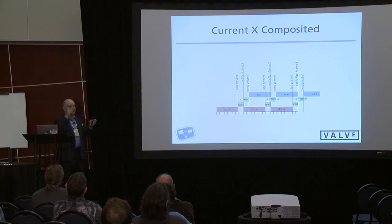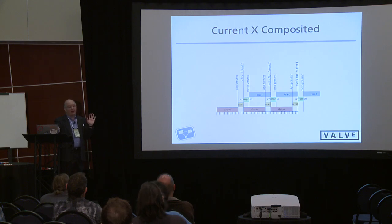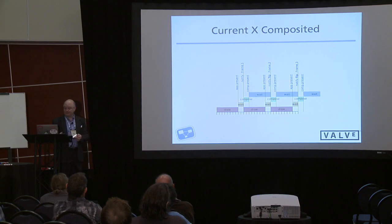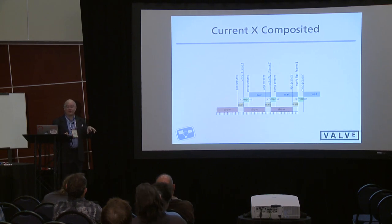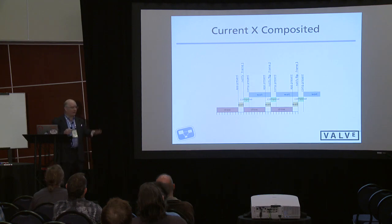Being always a frame behind would be tolerable if you told the application that — if the application knew when its frame was being displayed, it could probably survive. Windows does that and applications survive. Unfortunately, X actually tells the application that its frame was displayed when it told the compositing manager to display the frame, which is one frame early. So every frame is delayed by exactly one frame or more, and every frame the reported presentation time is a lie, which is suboptimal. You can see this in a composited environment if you've done gameplay in one — everything feels off. You turn off compositing, and it's awesome.